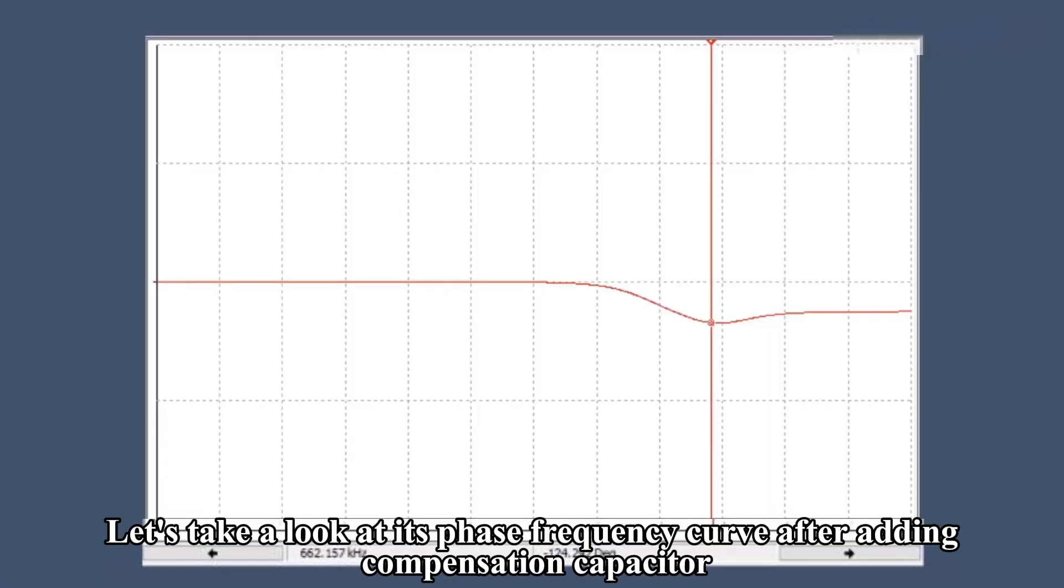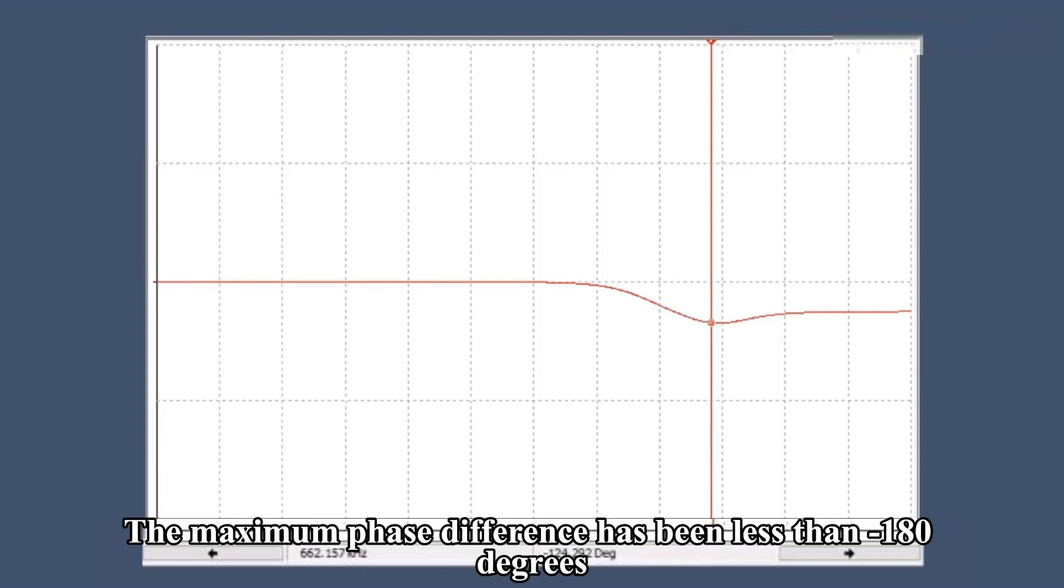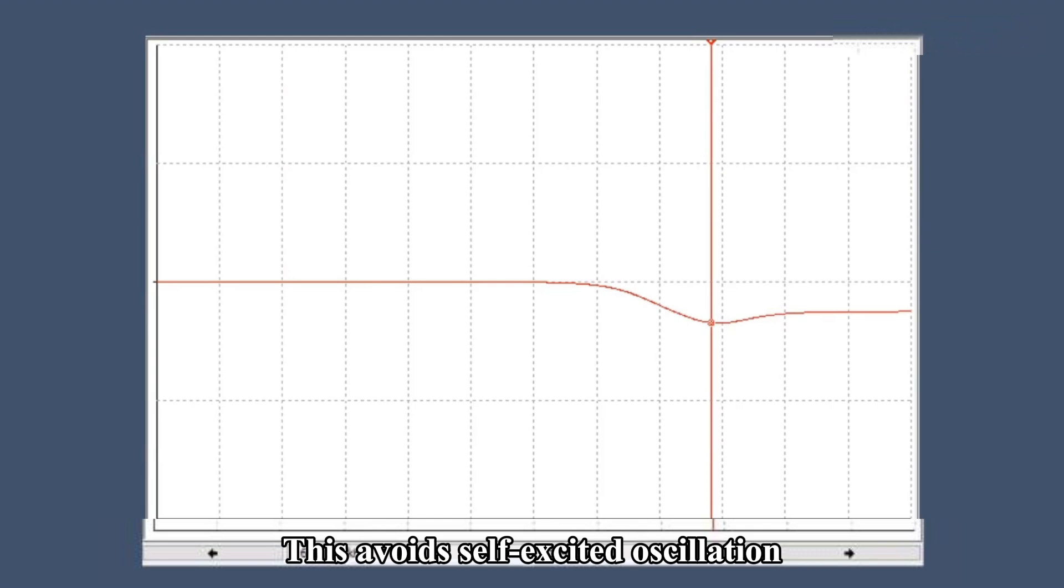Let's take a look at its phase frequency curve after adding the compensation capacitor. The maximum phase difference has been reduced to less than 180 degrees. This avoids self-excited oscillation.